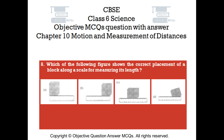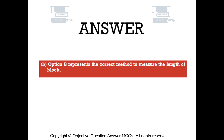Question number 8. Which of the following figures shows the correct placement of a block along a scale for measuring its length? Option A; Option B; Option C; Option D. The right answer is Option B. Option B represents the correct method to measure the length of a block.